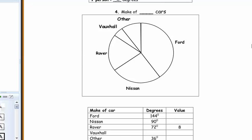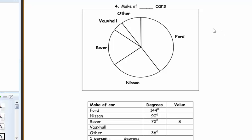Question 4 is a nice one because it doesn't tell you to start with how many cars in total. You're going to have to problem solve to figure that out. The only way is to look at the table. Which entry can you use to figure out the total? Rover — you know that 72 degrees is 8 cars, so you can use that. There are several ways of using that to fill out the rest of the table.